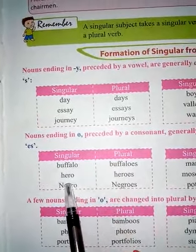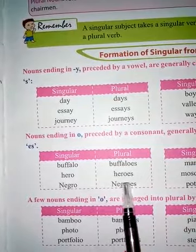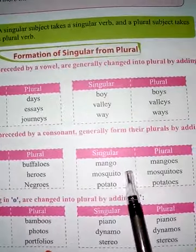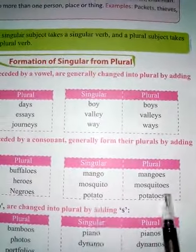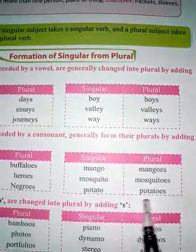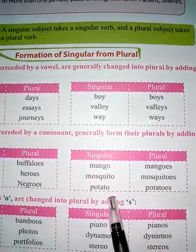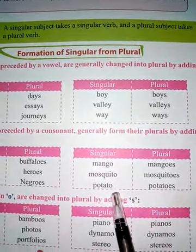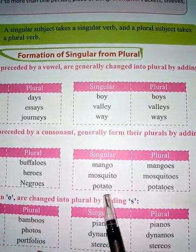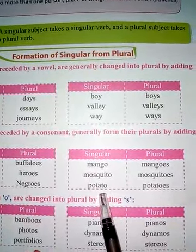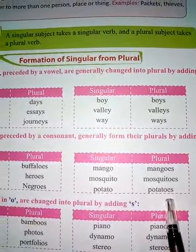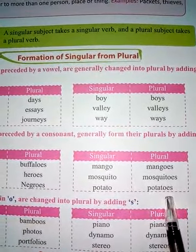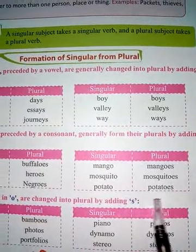Similarly, 'hero' — heroes. 'Negro' — negroes. 'Mango' — mangoes. 'Mosquito' — mosquitoes. 'Potato' — potatoes. O is there, before O, T is a consonant, so E-S will be added to make them plural form. Potato — potatoes.